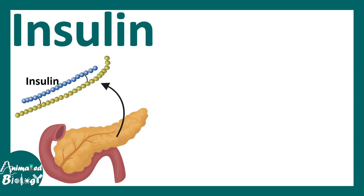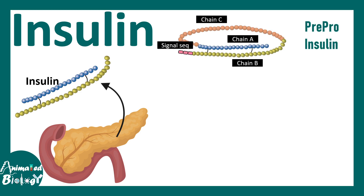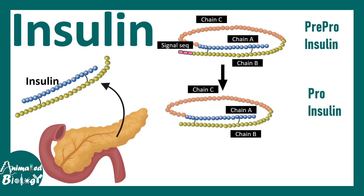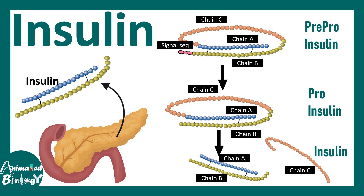In this video we'll be talking about insulin. Insulin is a peptide hormone secreted by the pancreatic endocrine pancreas, and insulin is processed in several steps. Initially it is pre-pro-insulin, which has a signal sequence and chains A, B, and C. Eventually the signal sequence is removed and it becomes pro-insulin with chains A, B, and C. Then chain C is removed and finally it becomes mature insulin and is secreted out.